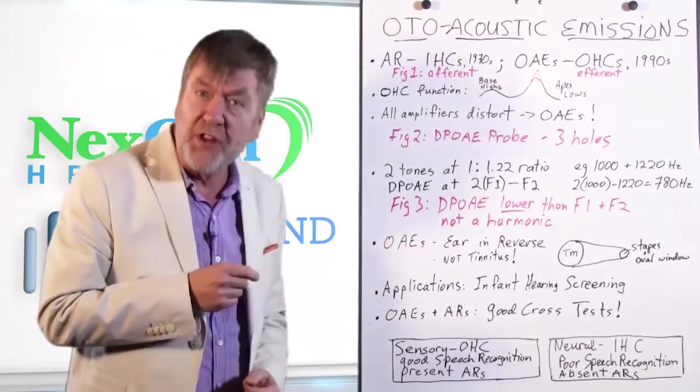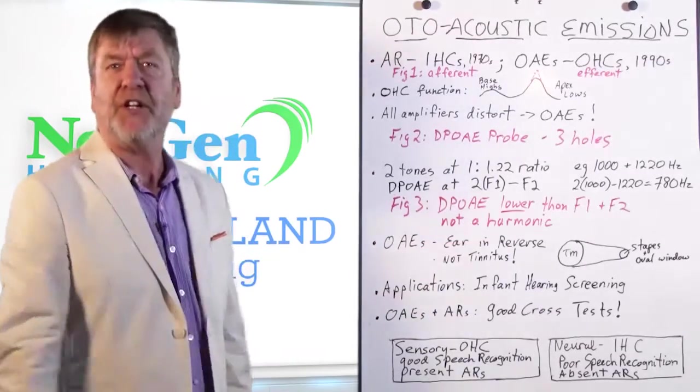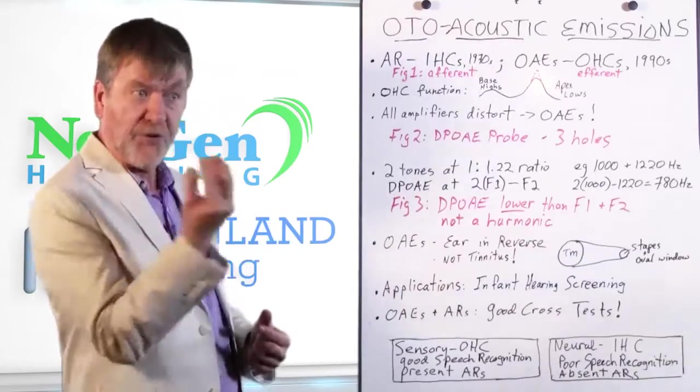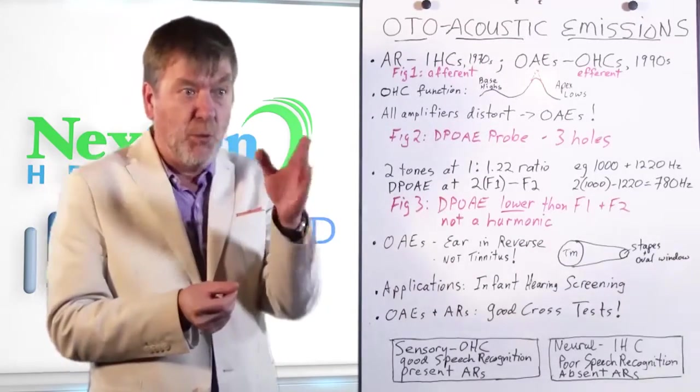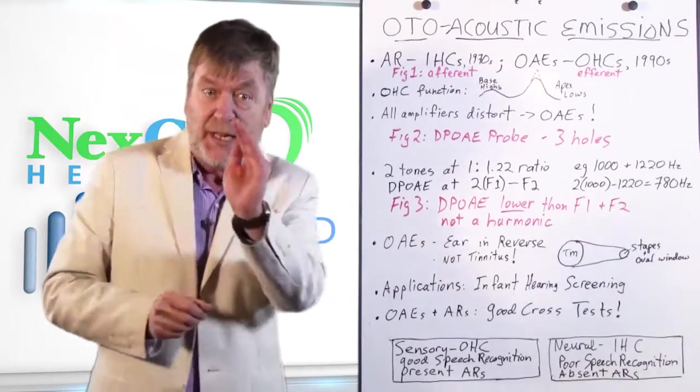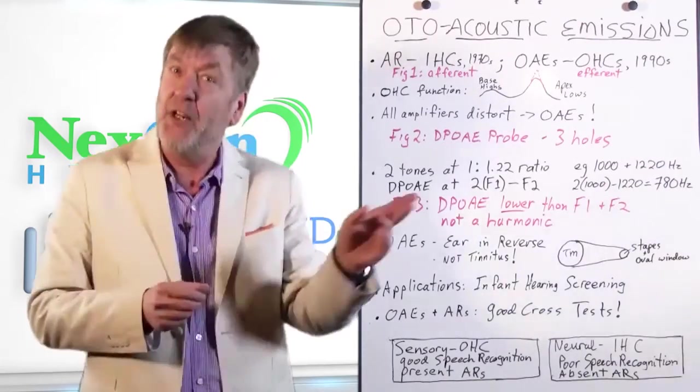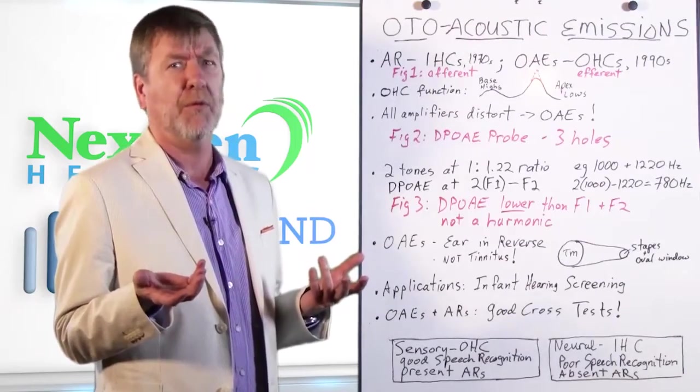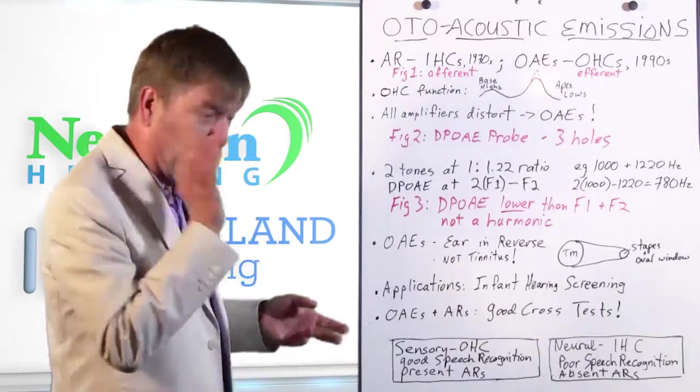Otoacoustic emissions, you can think of them as like the ear in reverse. The sounds are actually coming back out of the cochlea, wiggling the ossicular chain, and then making the eardrum act like a speaker. It's the ear in reverse. And one might think, well, how come we can't hear them? Well, thank God we can't. Here's why.